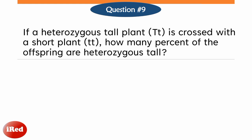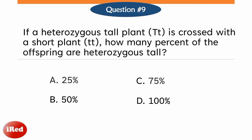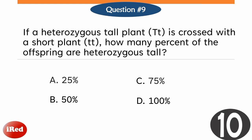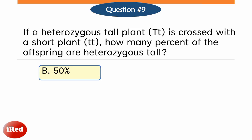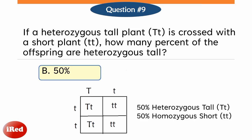If a heterozygous tall plant is crossed with a short plant, how many percent of the offspring are heterozygous tall? A, 25%; B, 50%; C, 75%; or D, 100%? The correct answer is letter B, 50%. The percentage that the offspring will be heterozygous tall is 50%, and 50% for homozygous short.